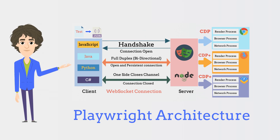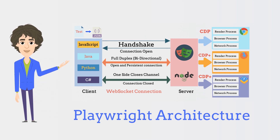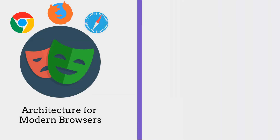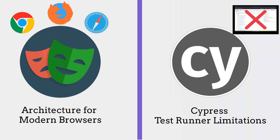Hello everyone. Let's discuss today about Playwright architecture. Playwright is aligned with the architecture of modern browsers and runs tests out of process. It is free of the typical in-process test runner limitations of Cypress.